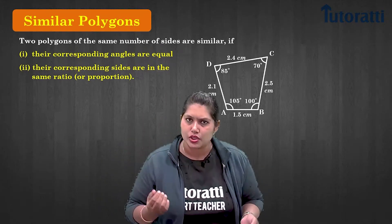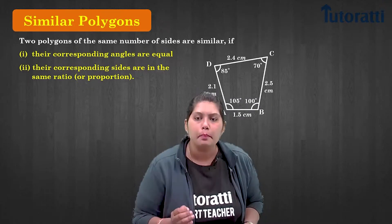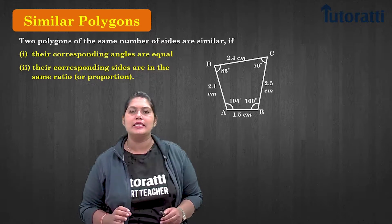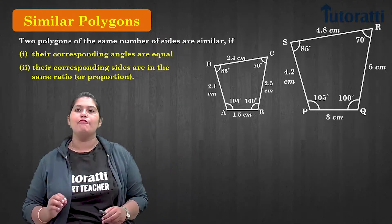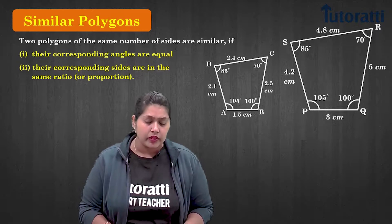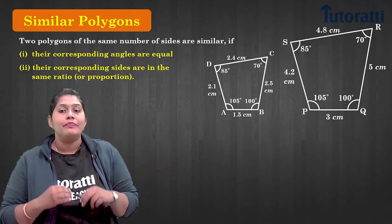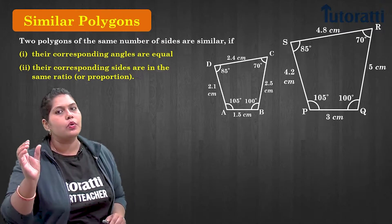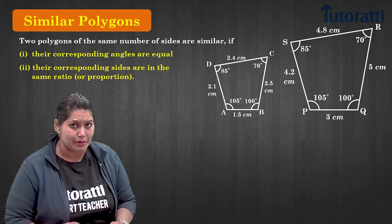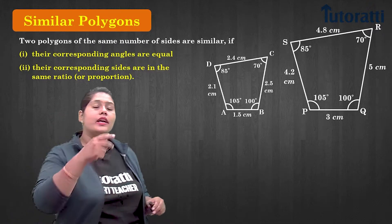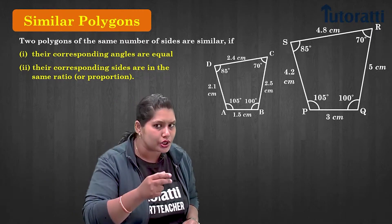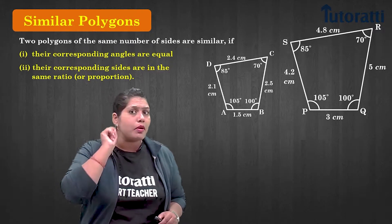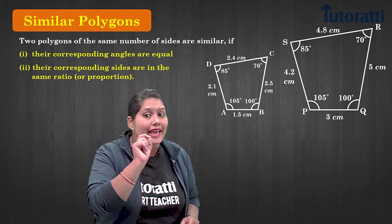Let's consider quadrilateral ABCD, which is a polygon, and quadrilateral PQRS, also a polygon. If I want to say that quadrilateral ABCD and quadrilateral PQRS are similar, then I need to check condition number one and condition number two.